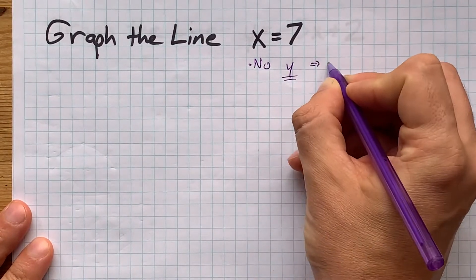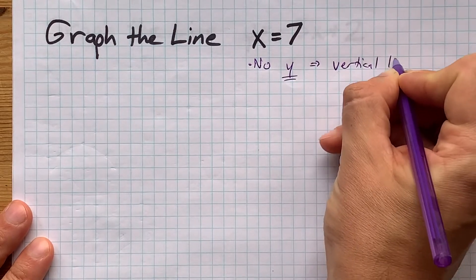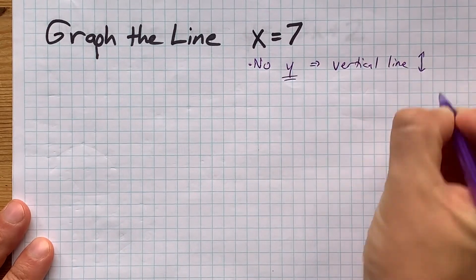I've personally memorized that when there's no y in the equation, it is a vertical line - that is one that goes straight up and down.